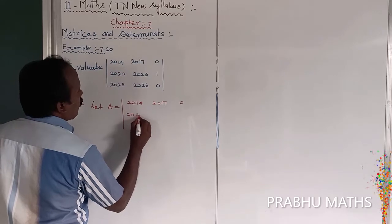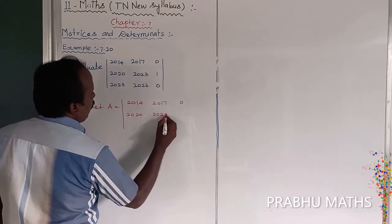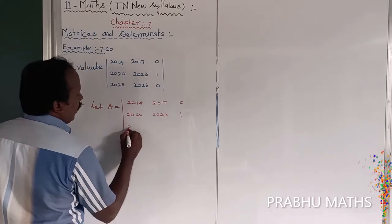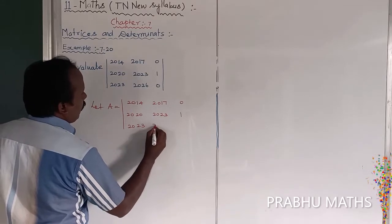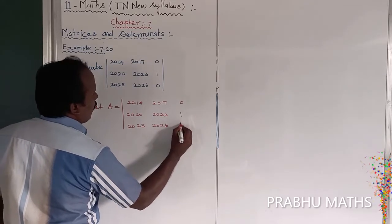Next 2020, 2023, next one 1. Next 2023, 2026, next one 0. Okay.